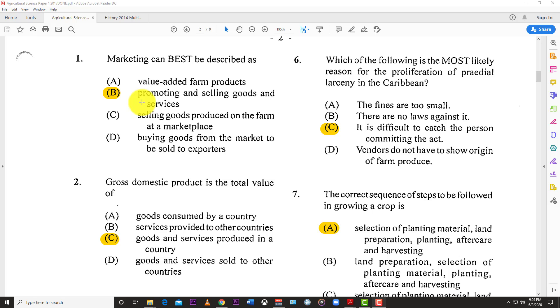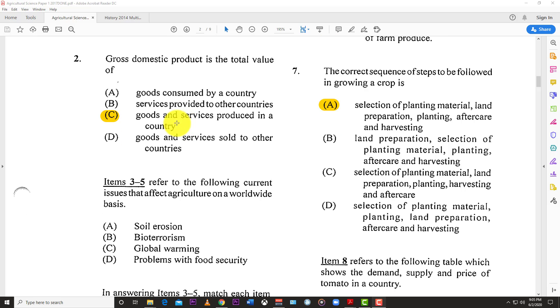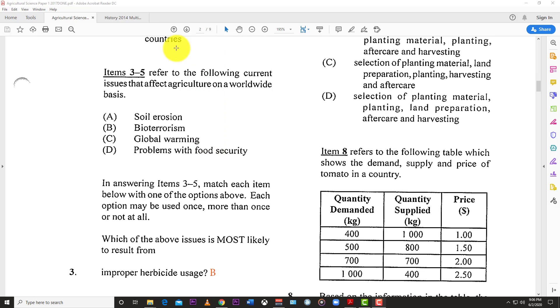Number one: Marketing can best be described as B, promoting and selling goods and services. Number two: Gross Domestic Product GDP is the value of C, goods and services produced in a country.